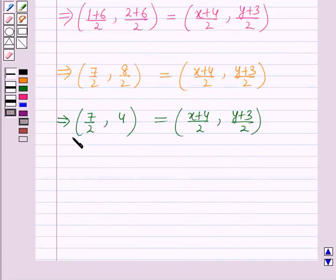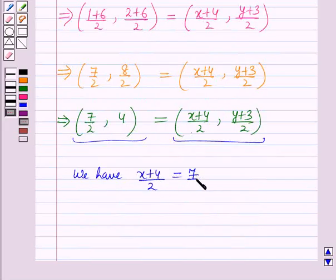Now since these two are equal, so equating the x coordinates, we have (x plus 4 by 2) equals 7 by 2. Which further implies, here 2 and 2 will be cancelled, so x equals 7 minus 4, which is equal to 3.